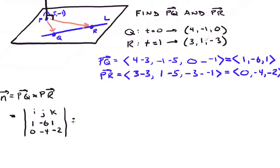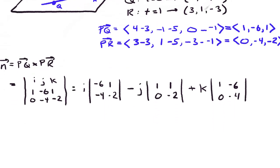And then the formula to evaluate the determinant would be i, and then the 2 by 2 determinant with -6, 1, -4, -2. Minus j, and then we're going to have 1, 1, 0, -2, plus k. And then 1, -6, 0, -4. And then don't forget that that j has to be negative. That's part of the formula.